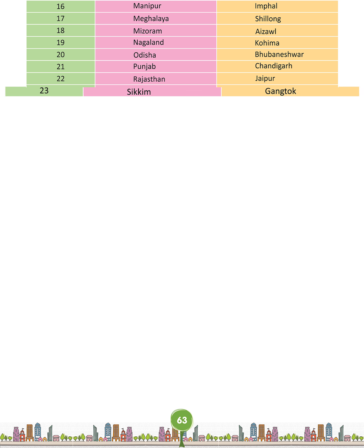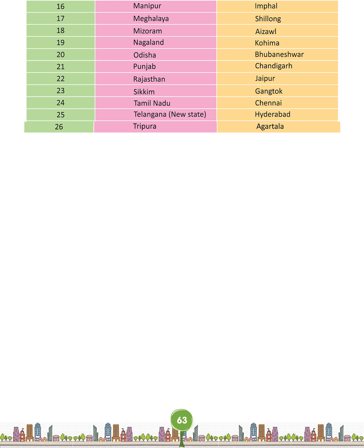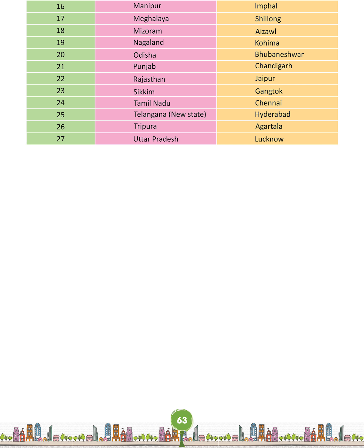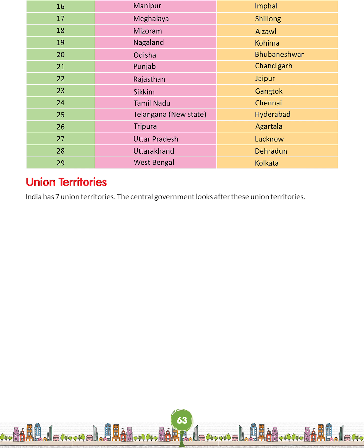Twenty-third: Sikkim — Gangtok. Twenty-fourth: Tamil Nadu — Chennai. Twenty-fifth: Telangana — Hyderabad (New State). Twenty-sixth: Tripura — Agartala. Twenty-seventh: Uttar Pradesh — Lucknow. Twenty-eighth: Uttarakhand — Dehradun. Twenty-ninth: West Bengal — Kolkata.